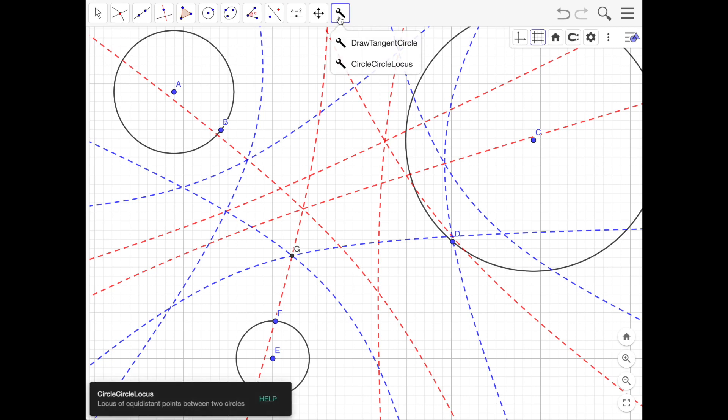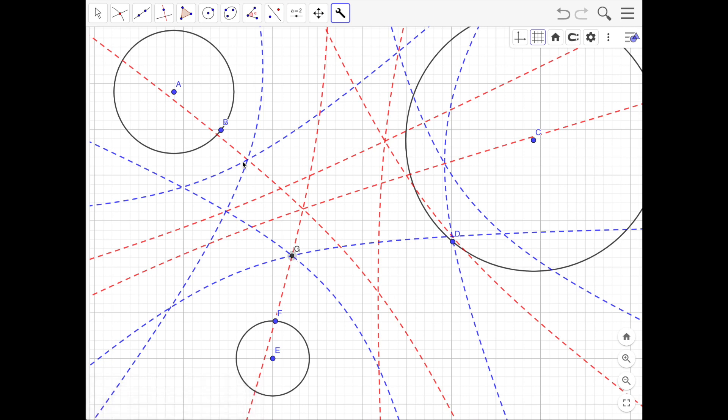So I also created a tool to make it more convenient to draw this tangent circle. So you select the center of the circle, select two of the other circles, and then there we have it, a circle that is tangent to all three circles.